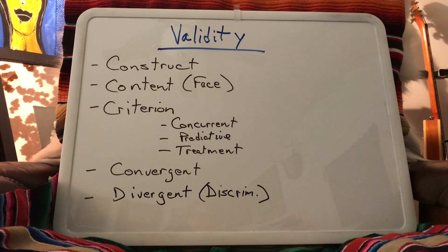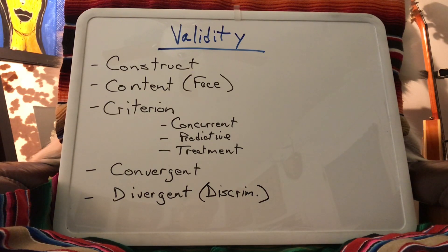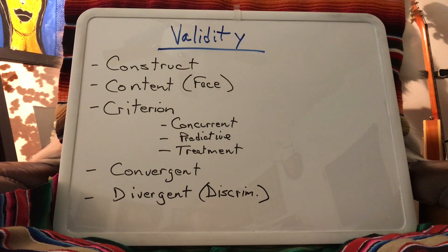Convergent validity is often seen when validating a test. If I've created a happiness test, I want to compare those results with a well-established test that measures something similar to happiness. I'd have you take my test and then the well-established one, run a correlation analysis, and with convergent validity I would expect a positive correlation — because we'd want the scores going in the same direction.